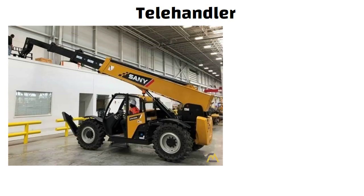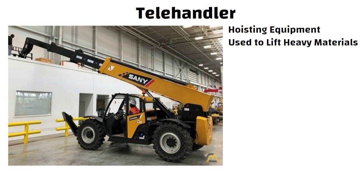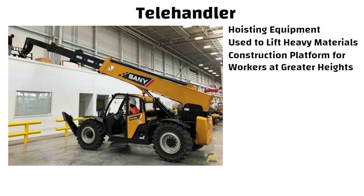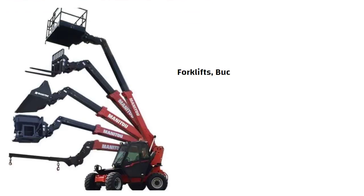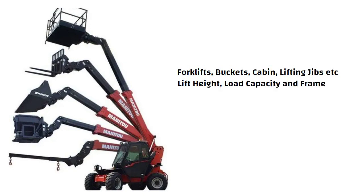Telehandlers are hoisting equipment used in construction to lift heavy materials up to a required height or to provide a construction platform for workers at greater heights. They contain a long telescopic boom which can be raised, lowered, or extended forward. Different types of attachments like forklifts, buckets, cabins, and lifting jibs can be attached to the end of the telescopic boom based on job requirements. There are several types of telehandlers with different variations of lift height, load capacity and frame size.